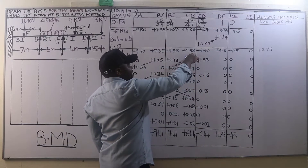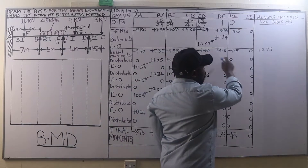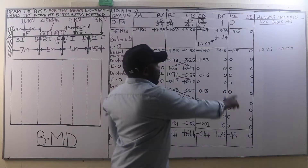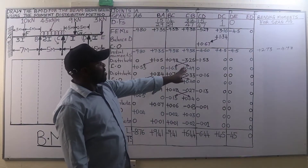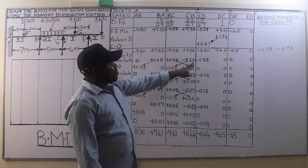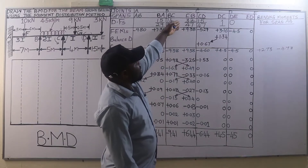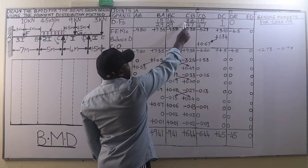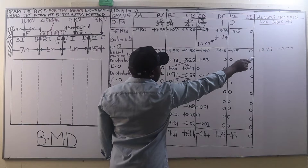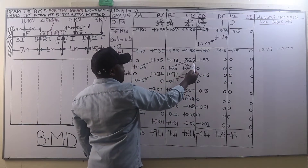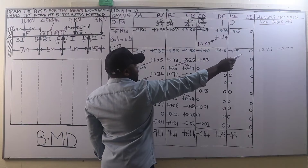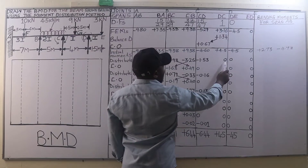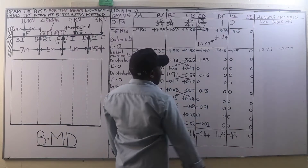The excess moment at C is minus 9.38 — changing signs — plus 4.60, which gives minus 4.78. Distributing that: on member CB we have 32/47 times minus 4.78, which is negative 3.25; on member CD, negative 4.78 times 15/47, that is negative 1.53. The others are zero, since 4.5 minus 4.5 is 0.